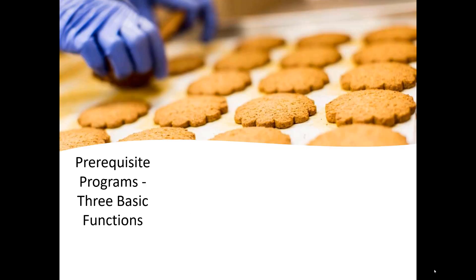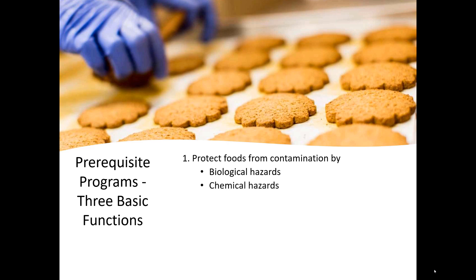And why do you do that? Well, there are three basic functions of putting prerequisite programs in place. Number one is to protect foods from contamination by biological hazards, chemical hazards, and physical hazards. You don't want to be bringing in additional hazards on top of those that can occur during the normal processing of food. For example, if there are potential chemicals in a product that must be removed during a particular processing step, you don't want to introduce more by not having a chemical handling procedure in place.